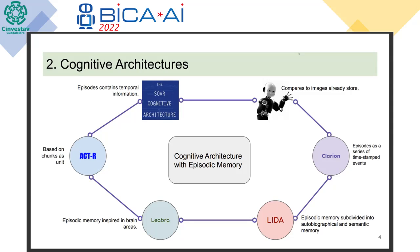If the image is similar to another stored image, it retrieves the similar image; if not, it will encode this new image and store it. Then we have ACT-R. ACT-R is a cognitive structure aimed at understanding human cognition. ACT-R has a unit of memory called chunks — these chunks include facts and meanings. The idea is similar to episodic memory, but it doesn't have a specific episodic memory module.